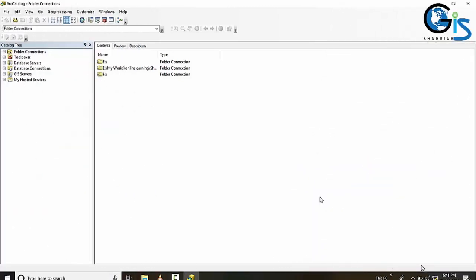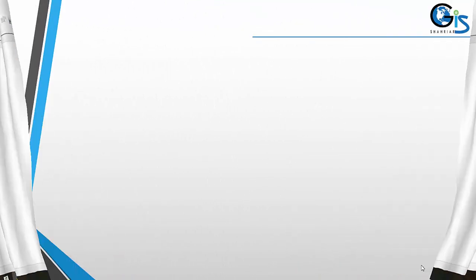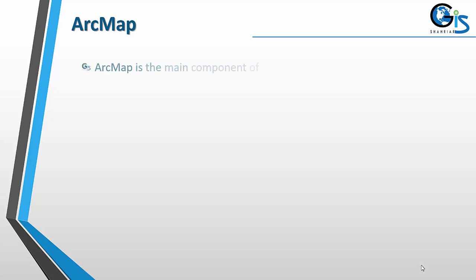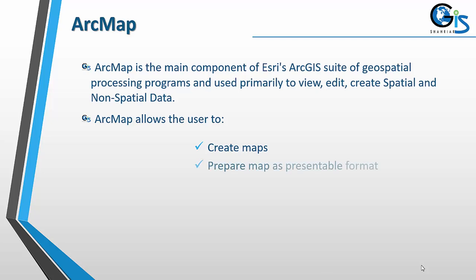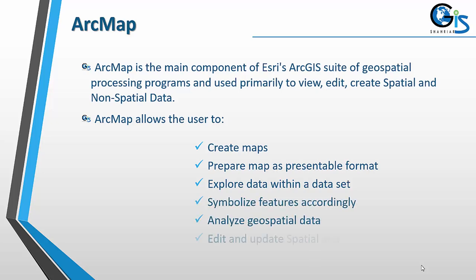Now let's see the interface of Arc Catalog. ArcMap is the main component of ArcGIS suite of geospatial processing programs and is used primarily to view, edit, and create spatial and non-spatial data. ArcMap allows the user to create maps, prepare the map in a presentable format, explore data within a dataset, symbolize features accordingly, analyze geospatial data, and edit and update spatial and non-spatial databases.